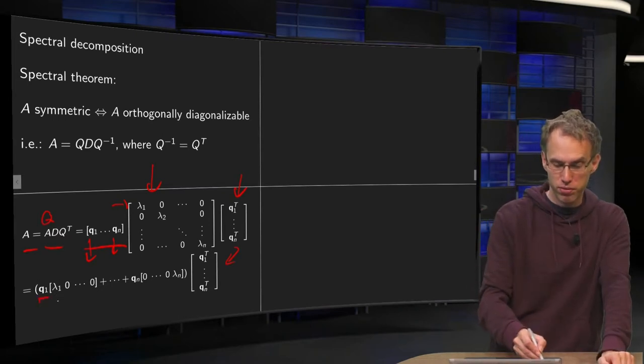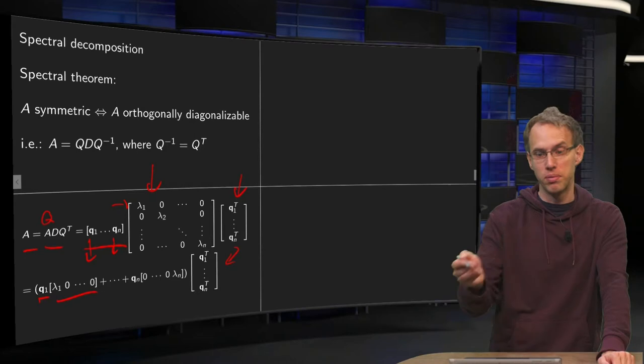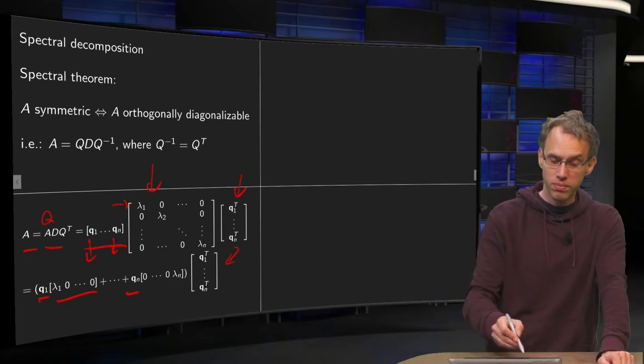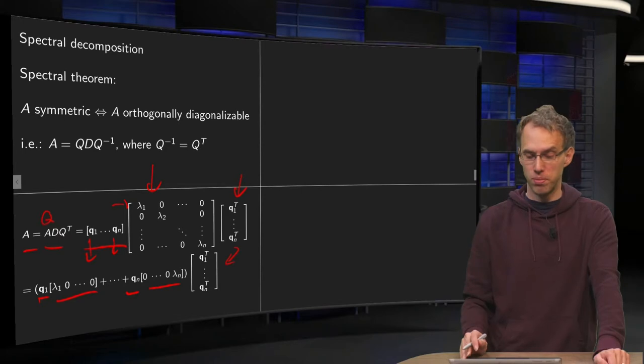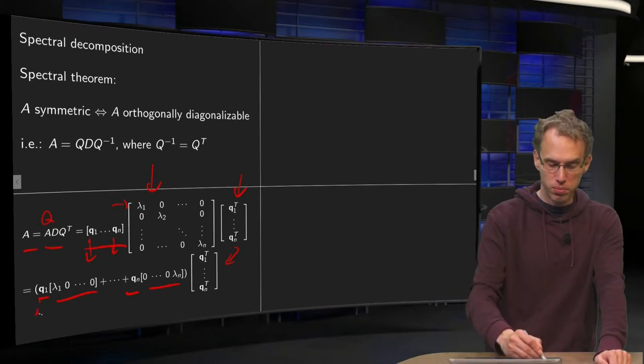That gives you your product matrix as a sum of matrices. So first column times first row plus second column times second row up to last column times last row.